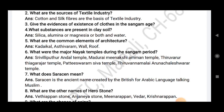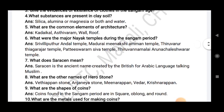What are the common elements of architecture? What are the major Nayak temples during the Sangam period? Answer: Steve Liputtur temple, Madurai Meenachiyaman temple, Thiruvarur Thiyagarajar temple, Pattiswaram Sivan temple, and Thiruvannamalai Arunachilaiswarar temple.